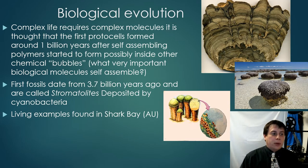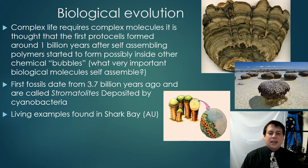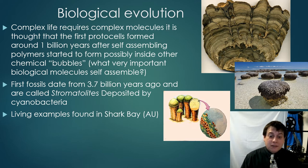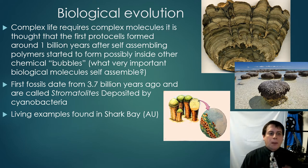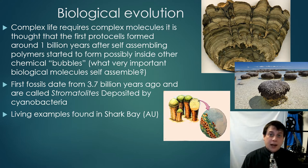Complex life requires complex molecules. It's thought that the first protocells — that's pre-cells or basic cells — formed around a billion years after some self-assembling polymers started to form, maybe inside little chemical bubbles. The most important self-assembling polymer is DNA. DNA and RNA are both self-assembling biological molecules — if you put a bunch of nucleotides together, they'll just start knitting themselves into a chain. That's literally how PCR, polymerase chain reaction, works — how you amplify DNA from a sample to figure out whose DNA it is.